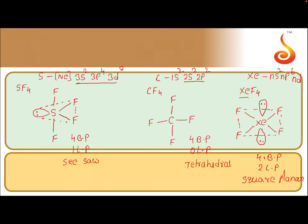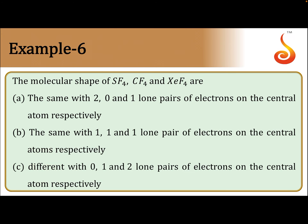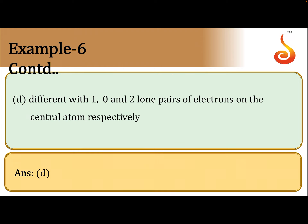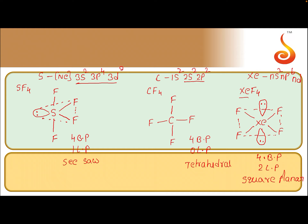Now analyzing the answer options: options A and B claim the shapes are the same, which is incorrect. Option C says they are different but incorrectly states the lone pair counts. Option D is correct: the shapes are different because SF4 has one lone pair giving a seesaw shape, CF4 has zero lone pairs giving a tetrahedral shape, and XeF4 has two lone pairs giving a square planar shape.